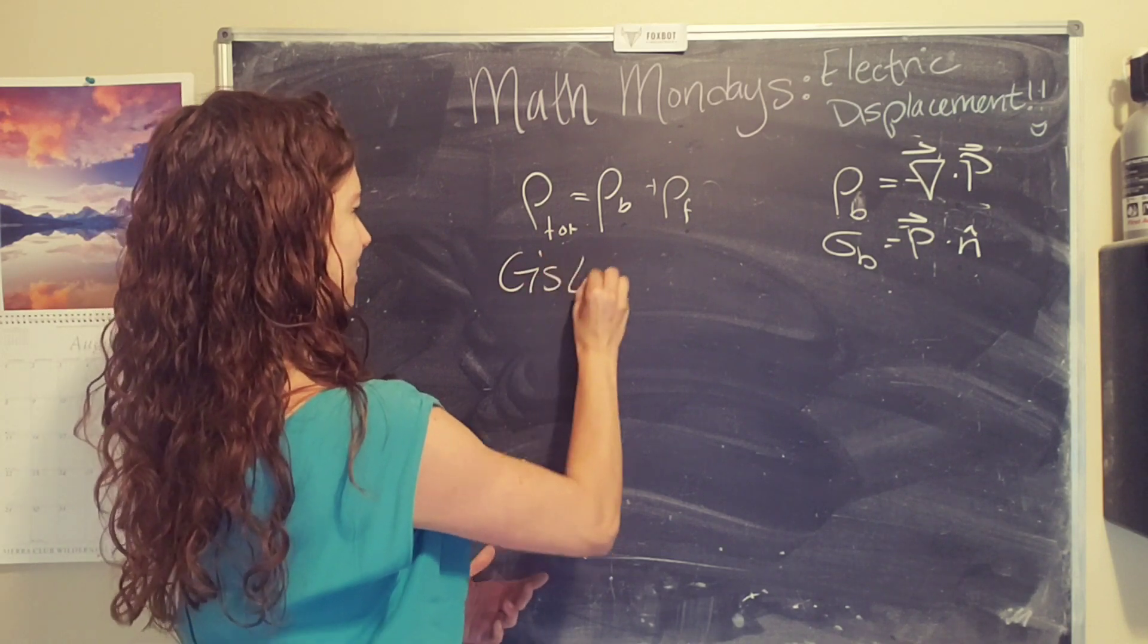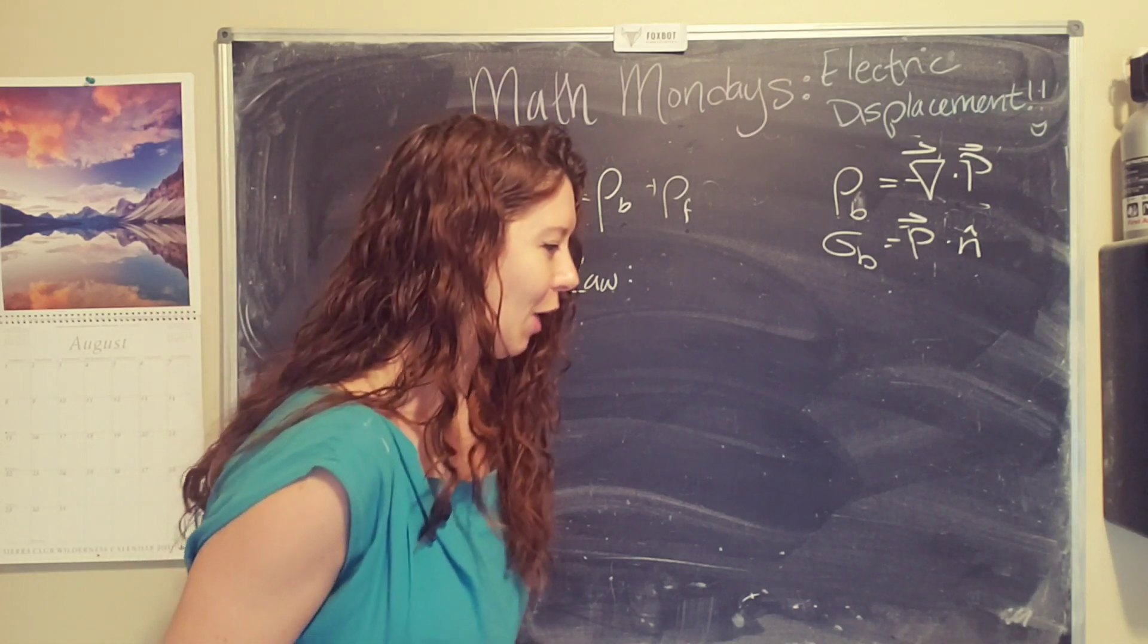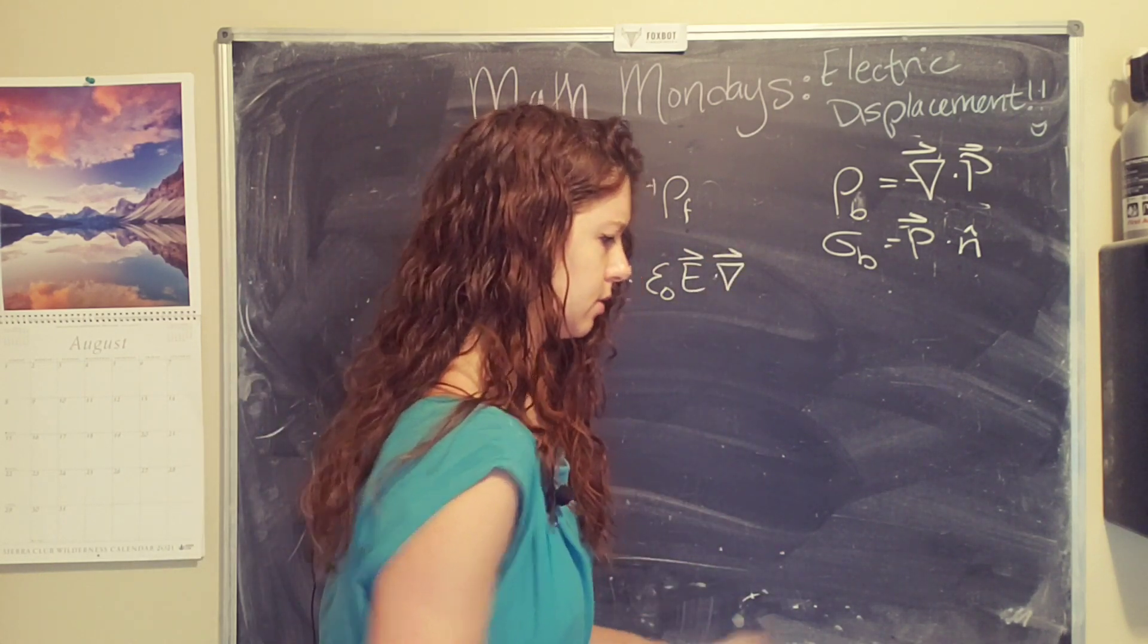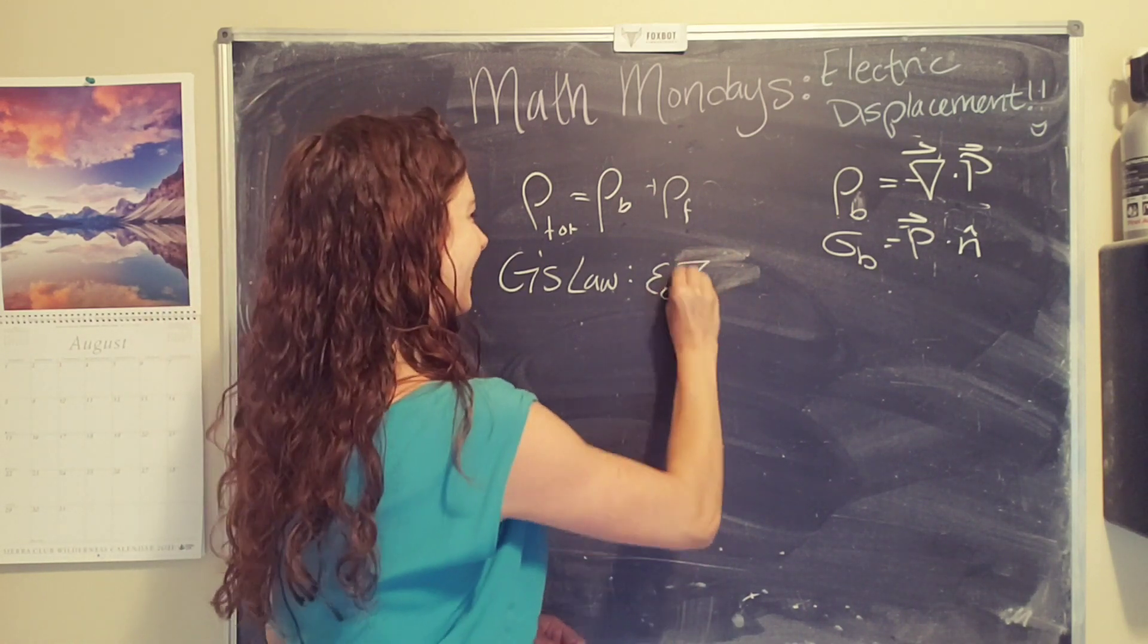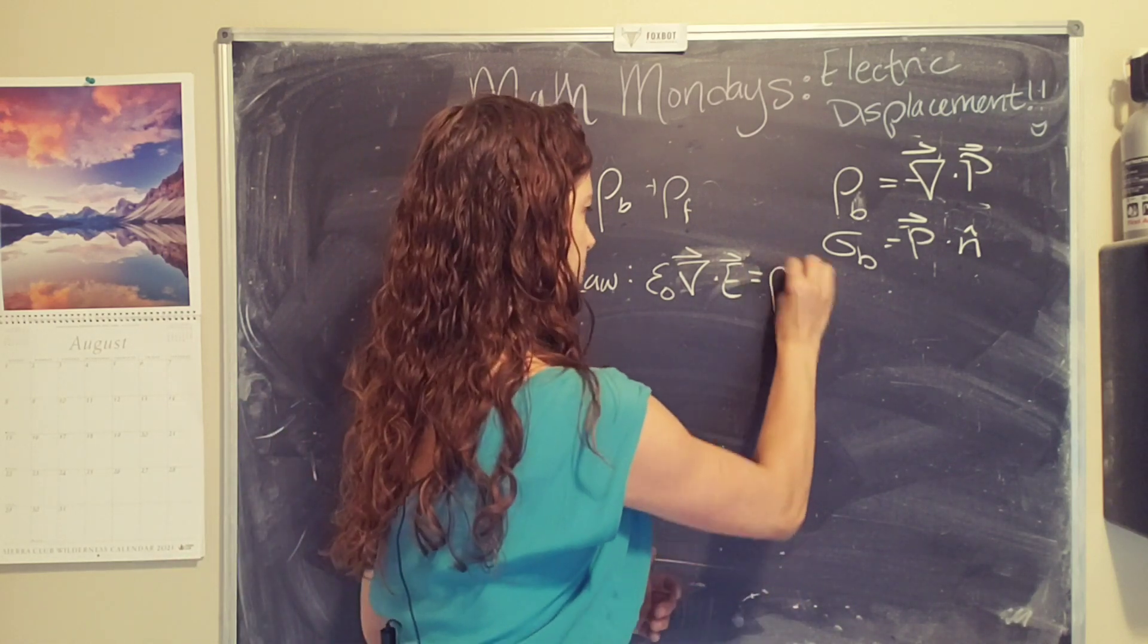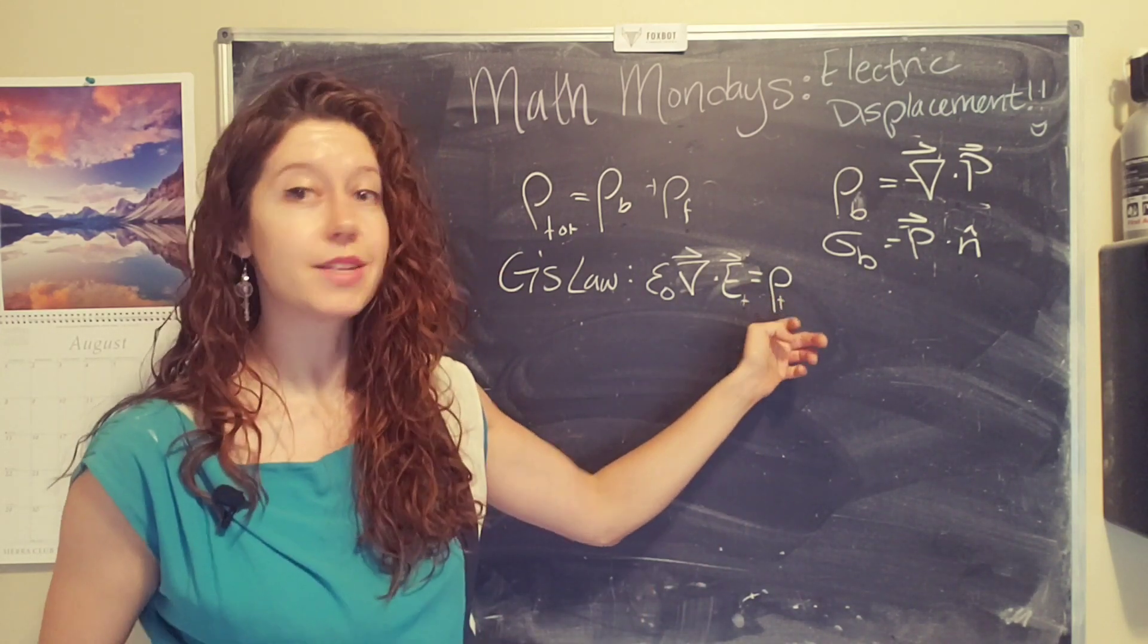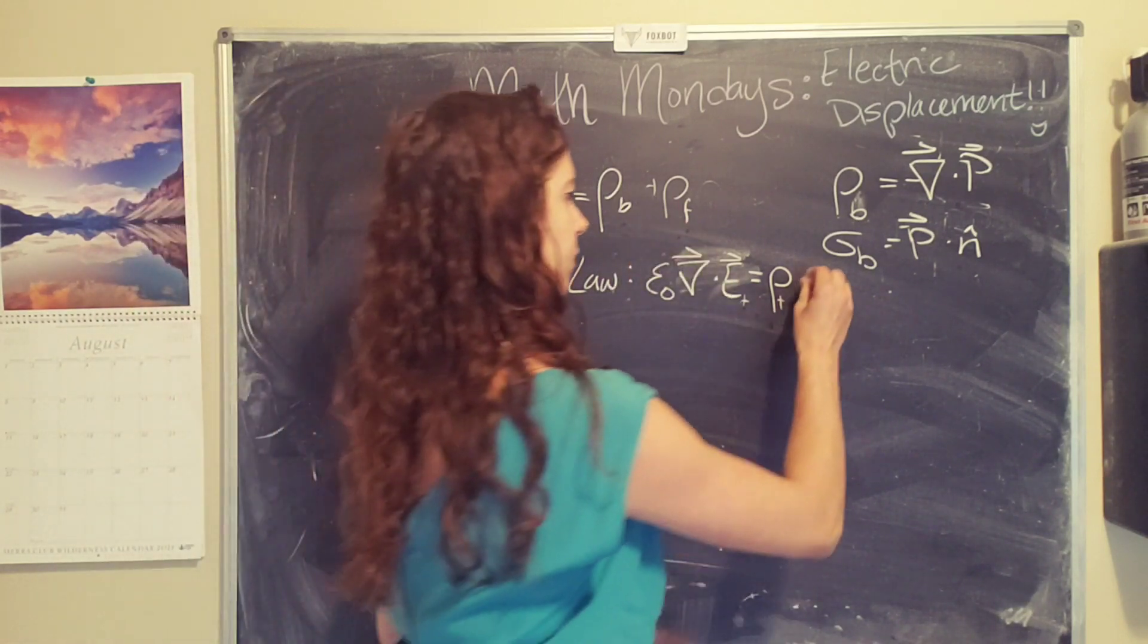So I'm going to abbreviate Gauss's law with G's law. So Gauss's law is epsilon naught, divergence of the electric field equals the total charge density. And so we're going to replace total charge density with the bound and free charges.